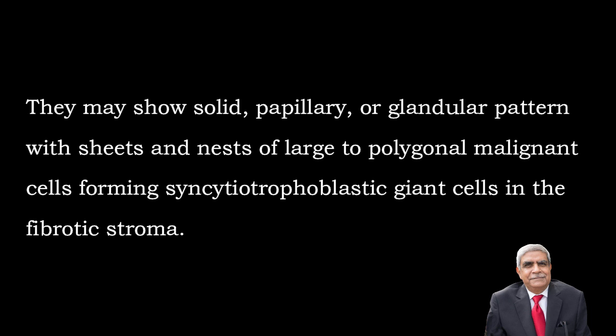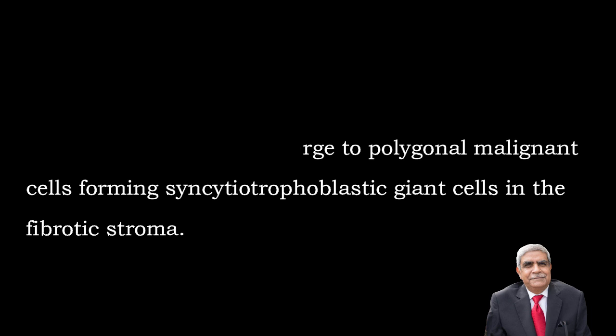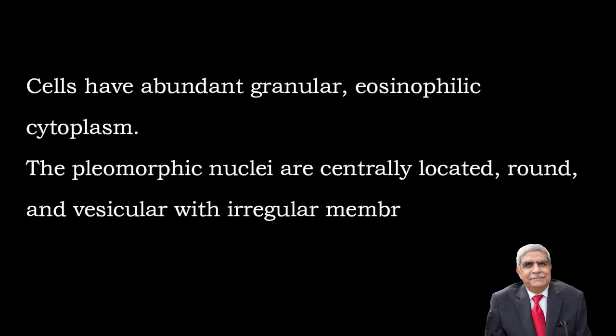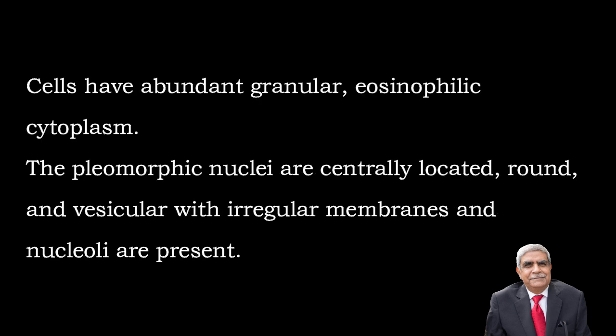The cells are malignant, forming syncytiotrophoblastic giant cells present in the fibrotic stroma. These cells have abundant granular eosinophilic cytoplasm. The pleomorphic nuclei are centrally located, round and vesicular, with irregular membranes, and nucleoli are present.